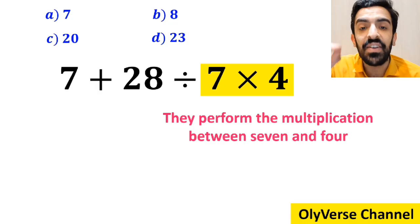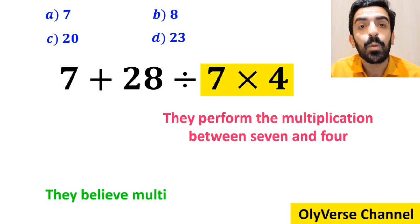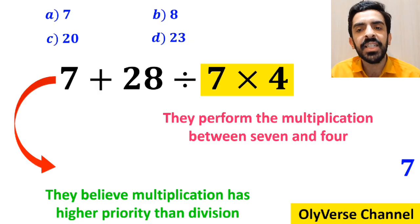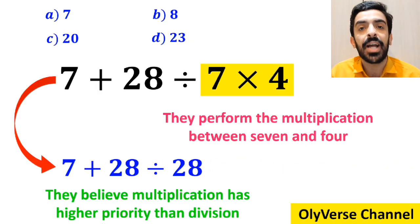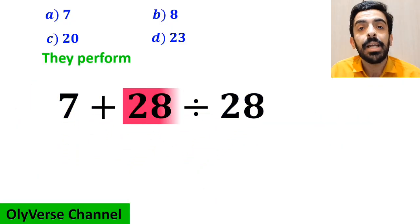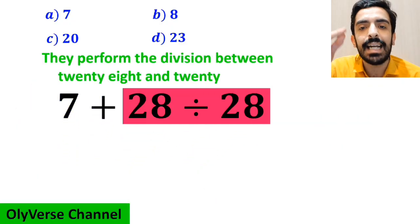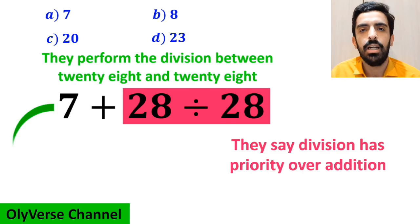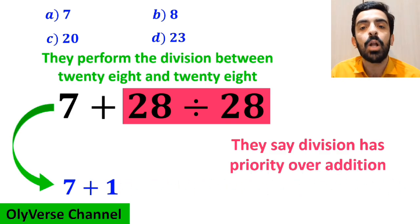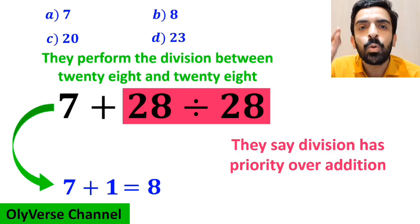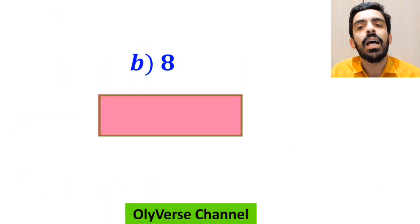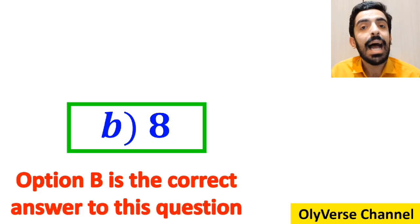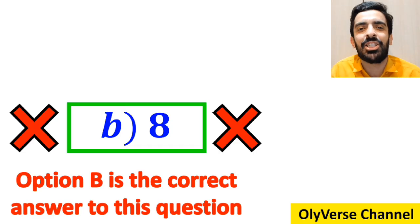They then perform the multiplication between 7 and 4, because they believe multiplication has higher priority than division. So they write 7 plus 28 divided by 28. Then they perform the division between 28 and 28, saying division has priority over addition, simplifying to 7 plus 1, which ultimately equals 8. They conclude that option B is the correct answer — however, it's not correct either.